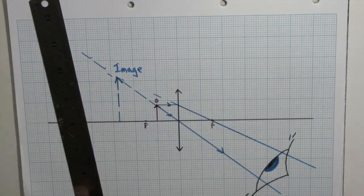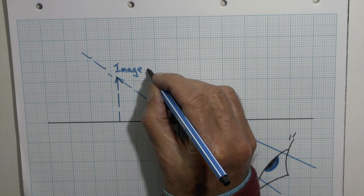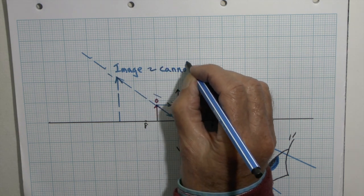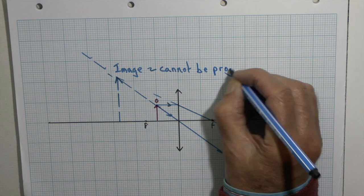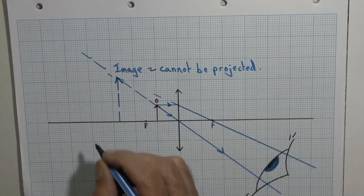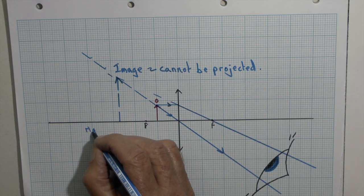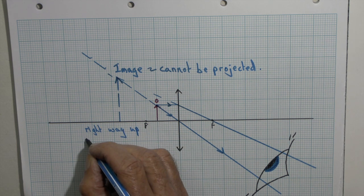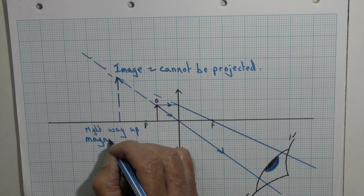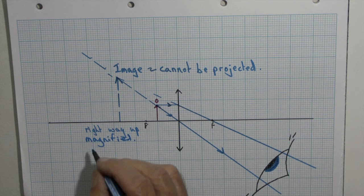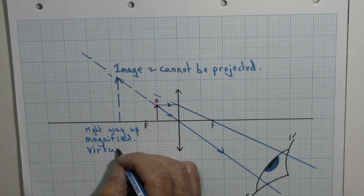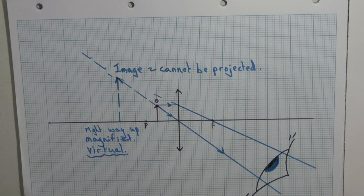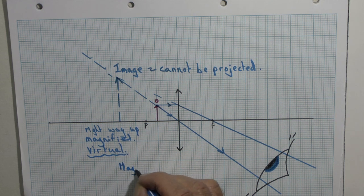It's not really there. You could not put it onto a screen. You could not project it onto a screen. It is a virtual image. It seems to be there. The eye is tricked into thinking it's there, but it is not really there. It is the right way up. And it is magnified. And we can calculate that magnification. But remember, it is a virtual image. It's not really there. We cannot project it.